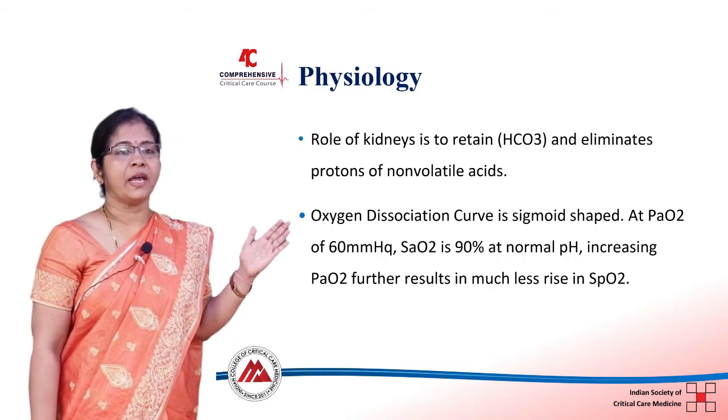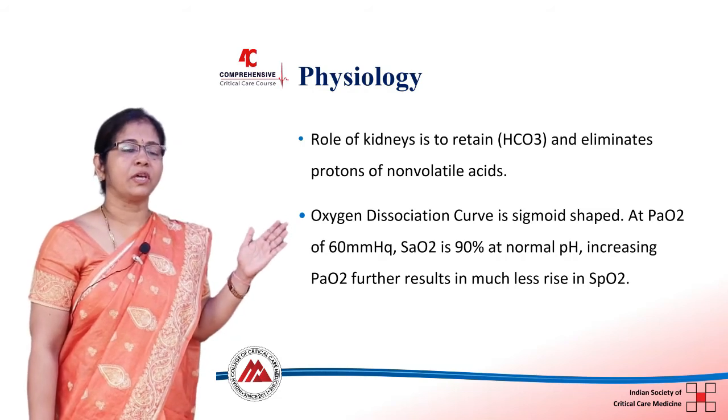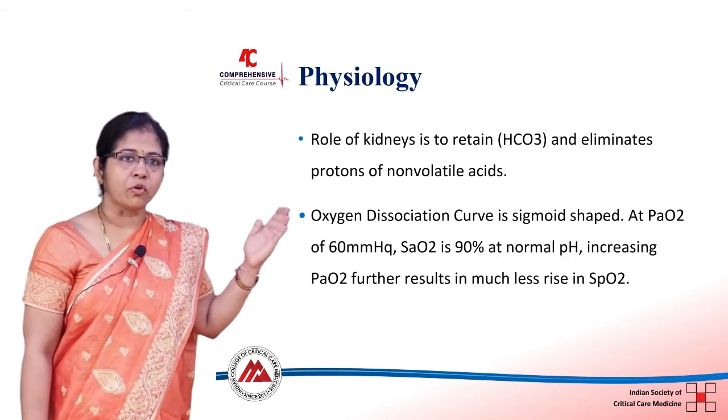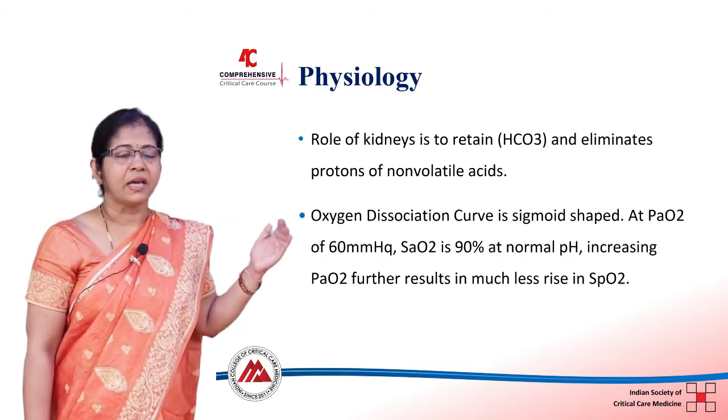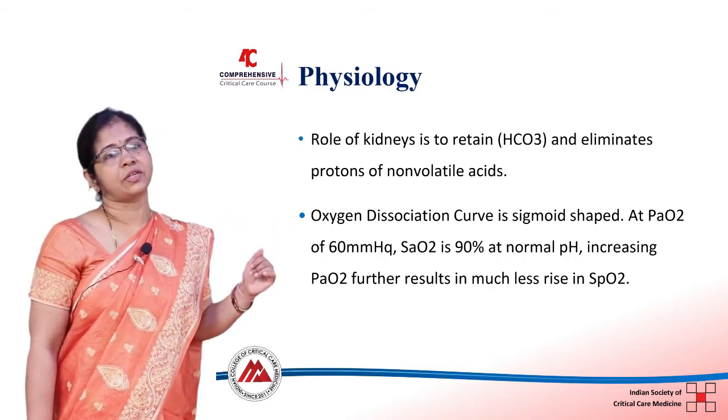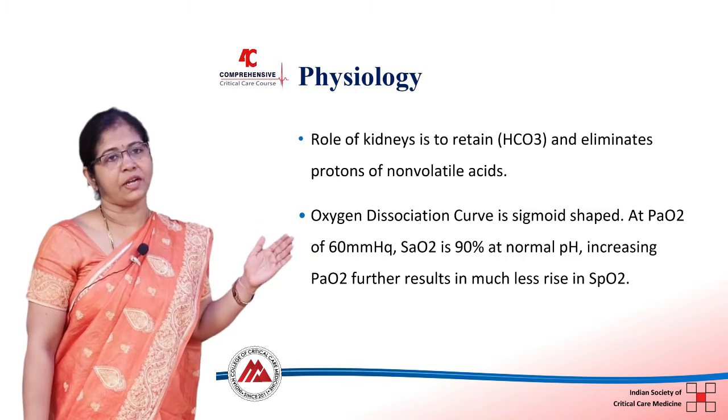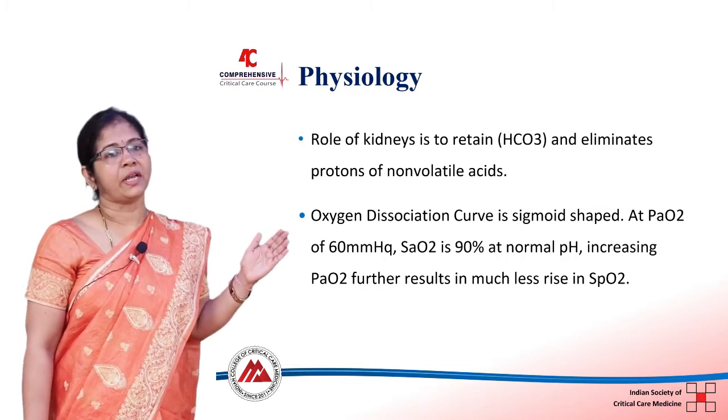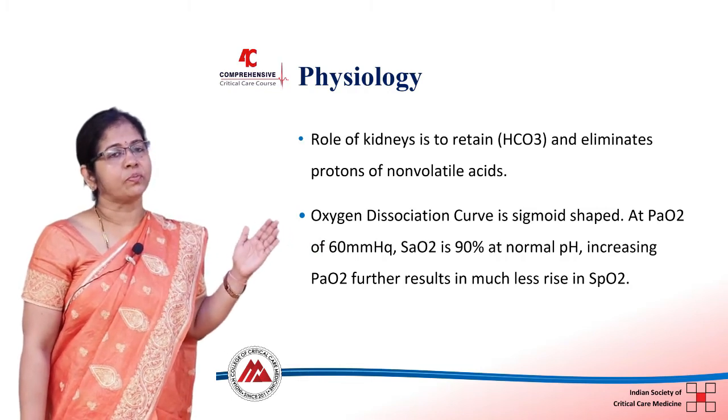So your aim should be to keep your PAO2 more than 60 and saturation more than 90 to maintain adequate tissue perfusion.